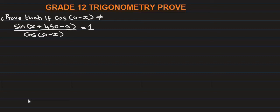We have tried to prove this. Trigonometry is very difficult to prove from right hand side to left hand side. If you want to use this function, you can use sin(x + 450 - a), all divided by cos(a - x). This is the left hand side.